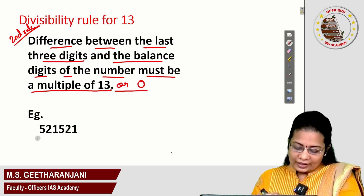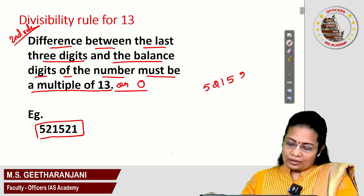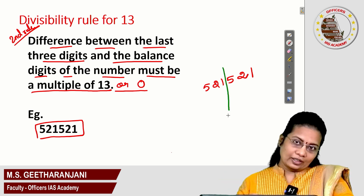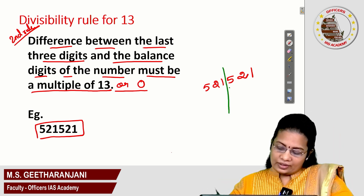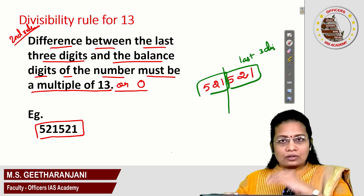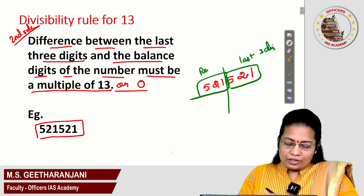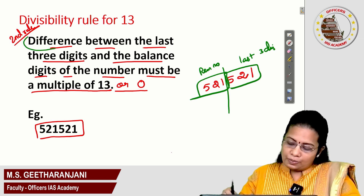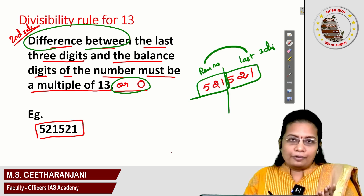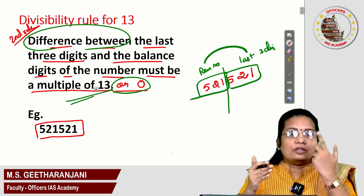For example, take the number 521521. If you segregate this number, you will get a set of three-digit numbers. 521 is the last three digits, and the remaining number is also a three-digit number, 521. This rule says the difference between these two numbers must be either 0 or a multiple of 13, and then the number is definitely divisible by 13.